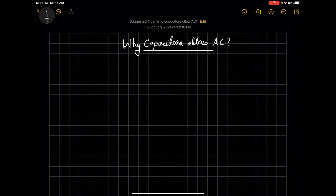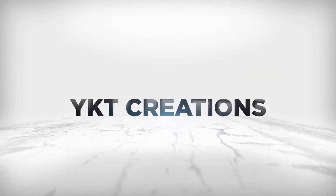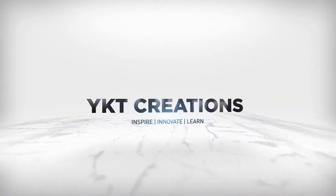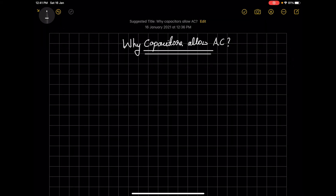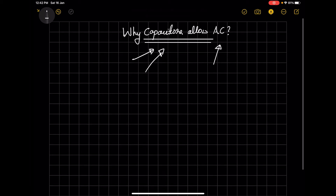Hello all, welcome to my channel. In this video we will see why capacitors allow AC signals. To understand this, you first need to understand what a capacitor is, what an AC signal is, and how capacitors behave with DC. I have done two videos on my channel covering AC and DC signals and how capacitors behave with DC, so please look at those first.